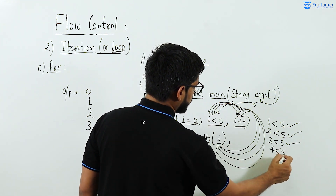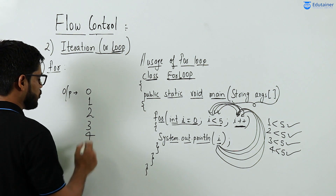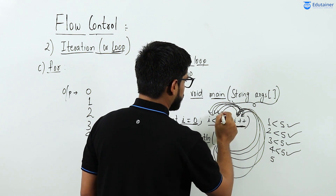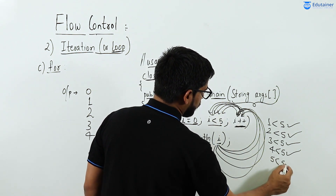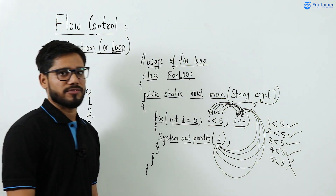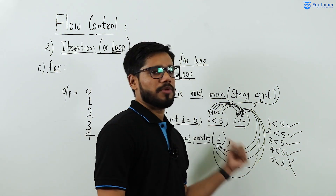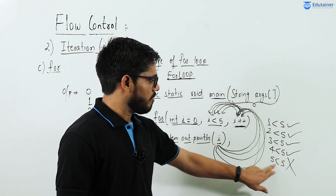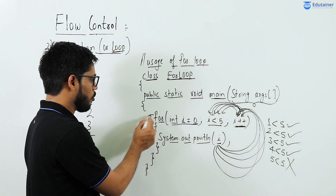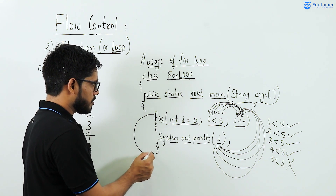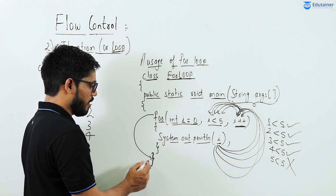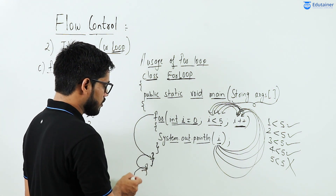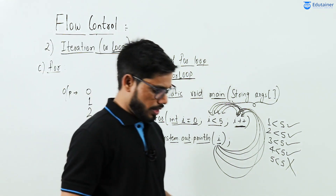Then increment — i becomes 5. Check condition: 5 less than 5 is false, because 5 is not smaller than 5. If there were an equal sign it would have printed 5, but since it's only less than, 5 less than 5 is false. So we directly exit the for loop body and come to the closing curly brace of the main method, and there is nothing more to execute.